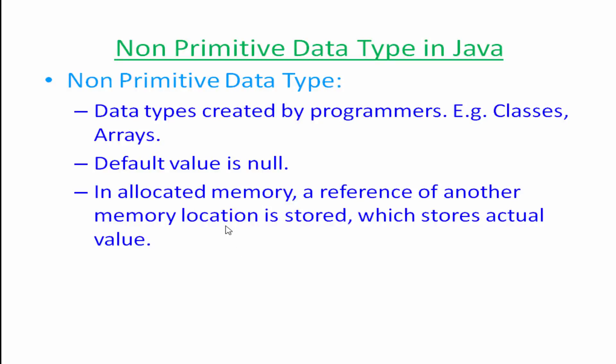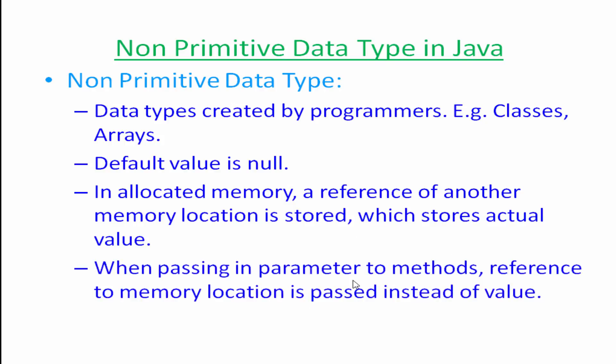When passing parameters, the memory location reference is passed instead of the value. So if we are passing a non-primitive data type, the reference of that memory location will be passed, but if we are passing a primitive data type then the actual value will be passed. That's it for today's lecture — in the next lecture we will learn more about Java programming language. Thank you very much.